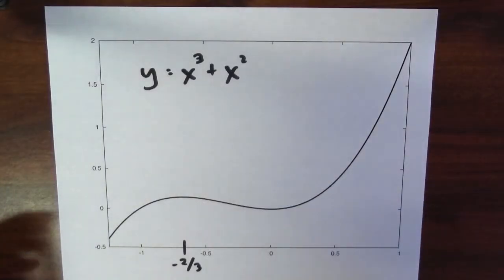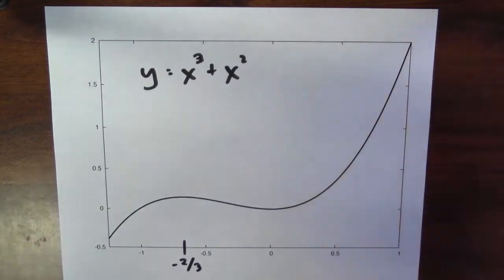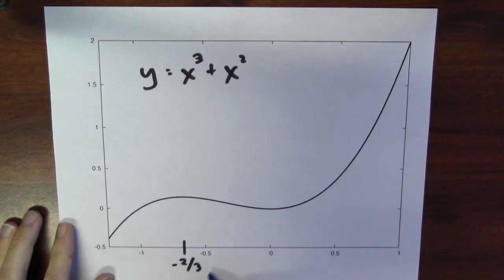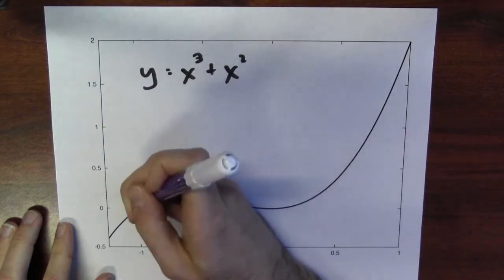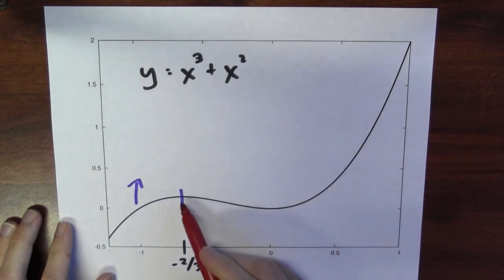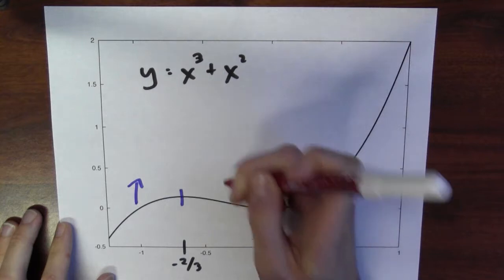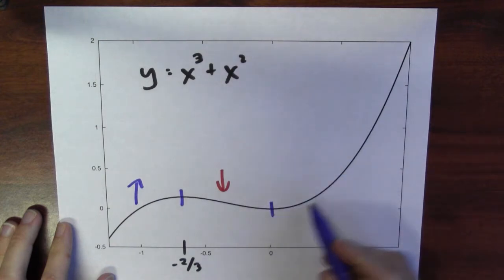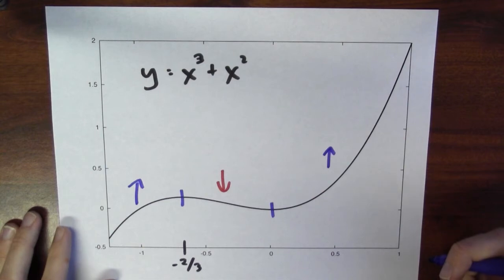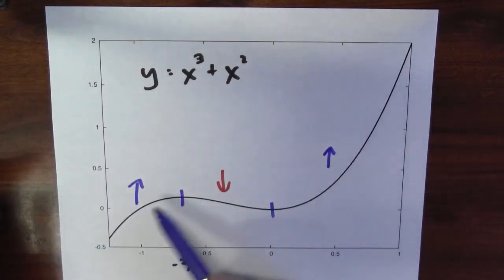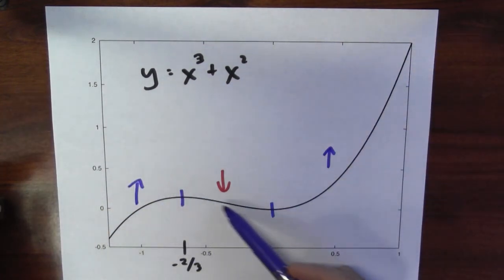We can use this information to say something about the graph of x cubed plus x squared — it goes up, down, and up — and that's exactly what you'd expect from the derivative. To the left of minus 2/3, the derivative is positive, and indeed the function is going up. At minus 2/3, the derivative is 0. Between minus 2/3 and 0, the derivative is negative, and the graph is moving down. At 0, the derivative is positive again, and the graph goes back up. The sign of the derivative — positive, negative, positive — is reflected in the direction the graph is moving: increasing, decreasing, increasing.